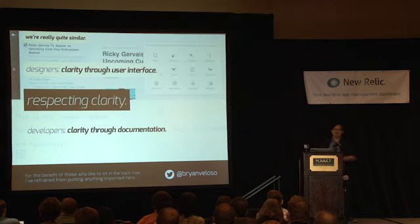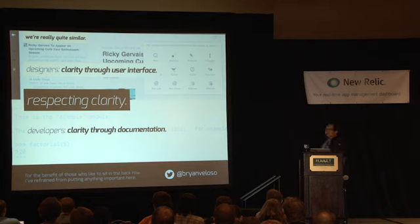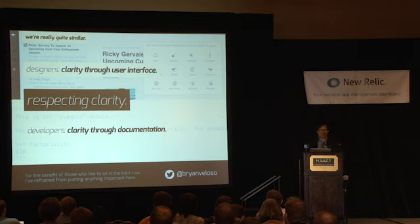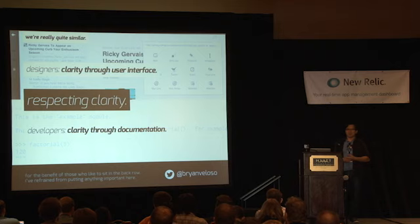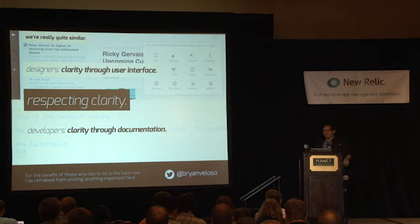Respecting clarity. For designers, it's clarity through user interface — like the Reader iOS app for iPad, a very clear and straightforward interface. For Python developers, it's clarity through documentation: going into a project knowing exactly what you need to do, where every method is documented and you can go to Read the Docs and understand the whole project without diving into code. That's something this community is extremely proud of.